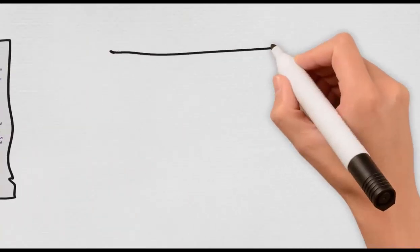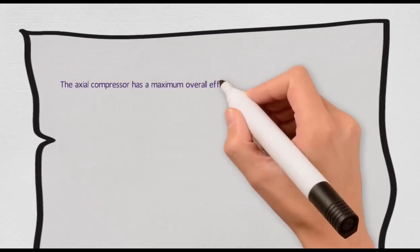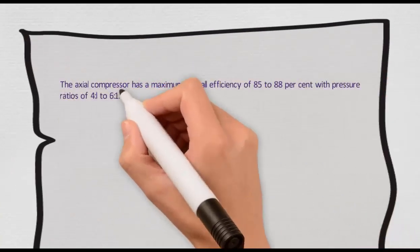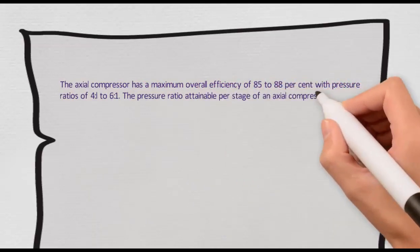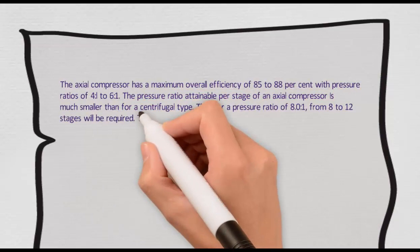The centrifugal compressor has lower efficiency than the axial compressor. The axial compressor has a maximum overall efficiency of 85 to 88 percent with pressure ratios of 4 and reaches 6.